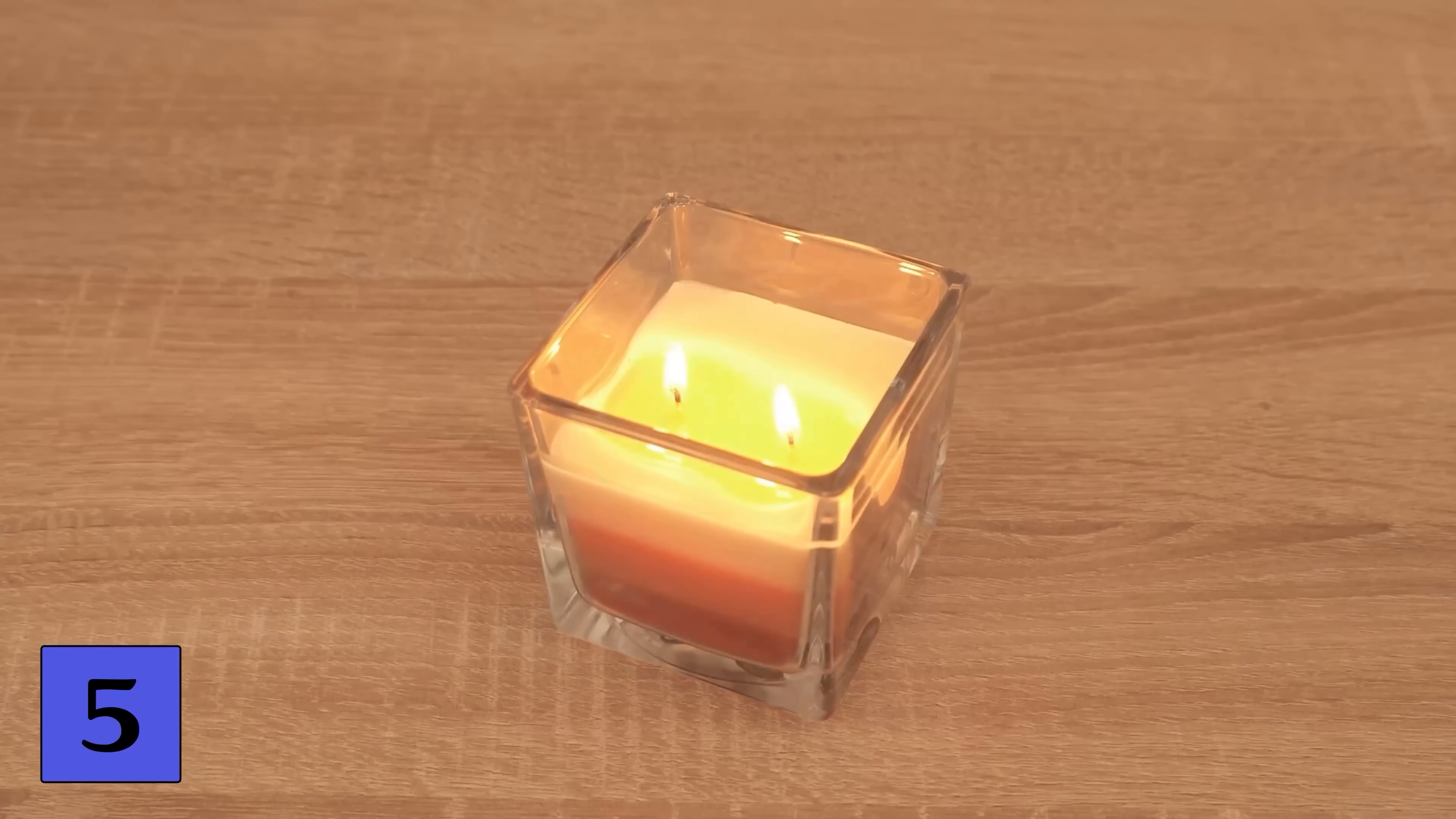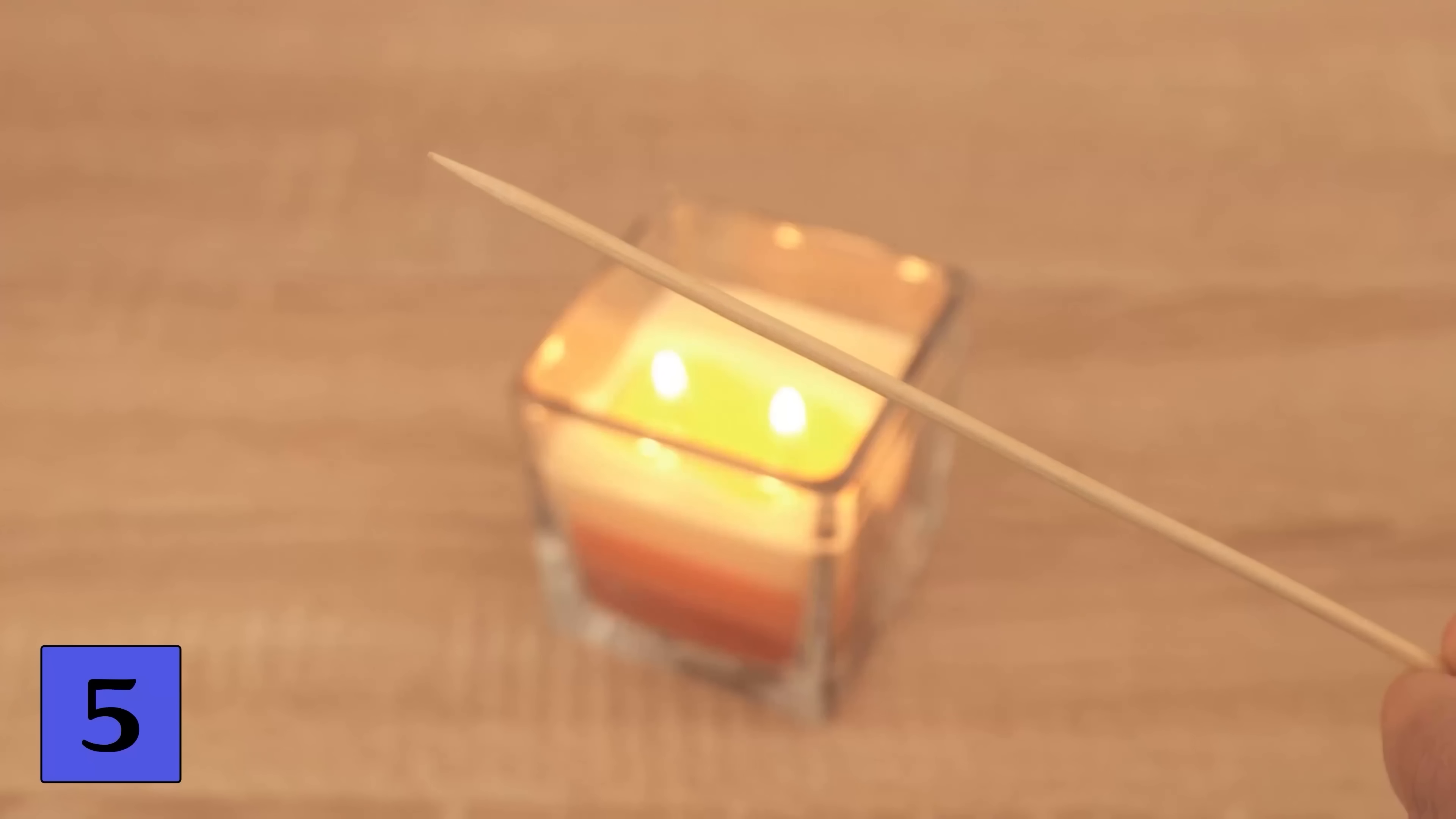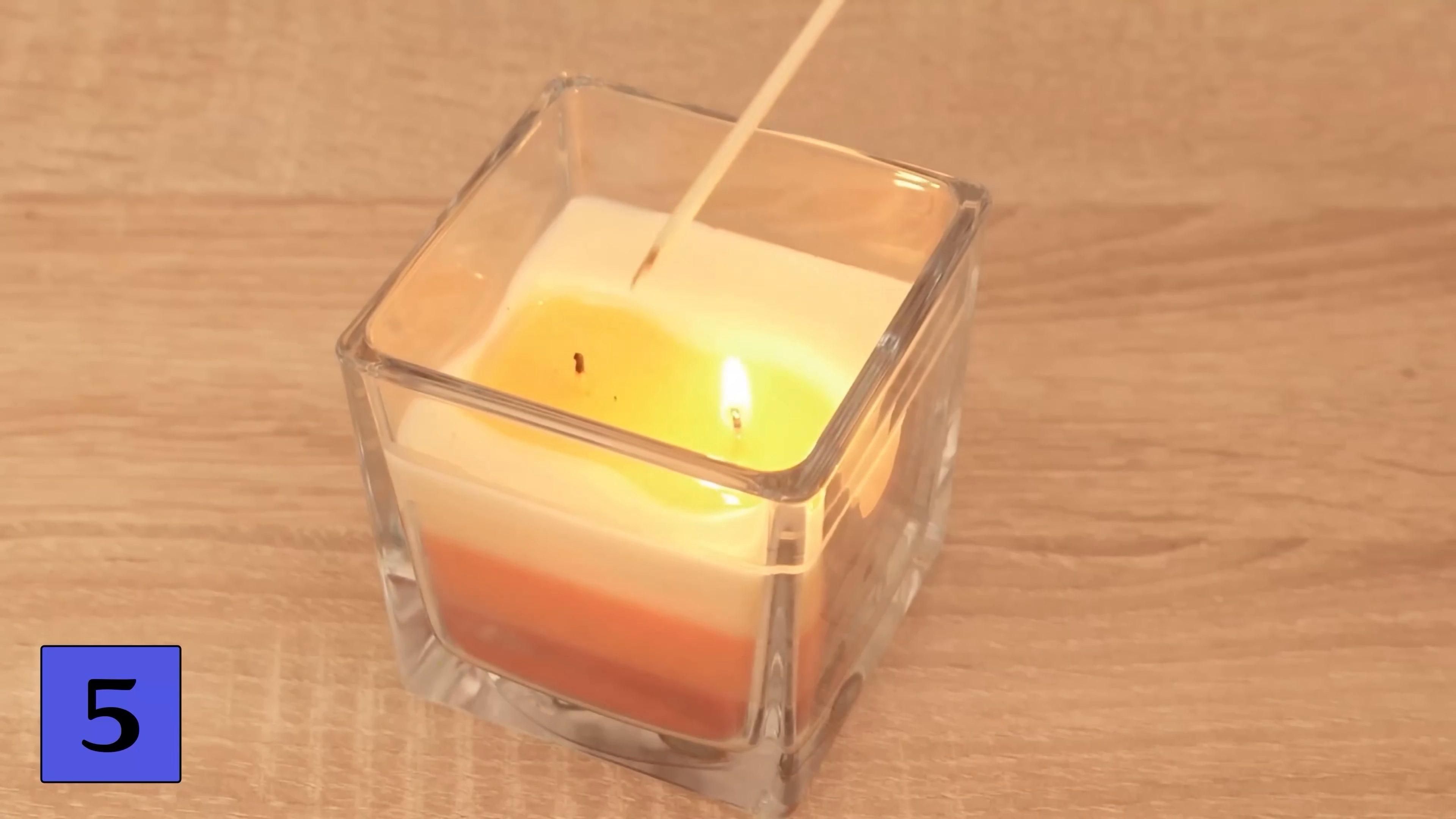All you need is a small pointed object. I have such a wooden skewer but you can also use anything made of metal. With this you should now go to your wick and push it slightly to the side and drown it in the candle wax.